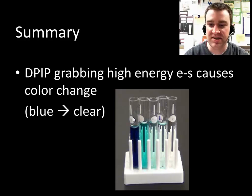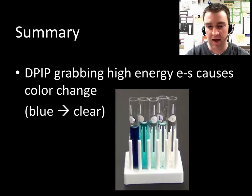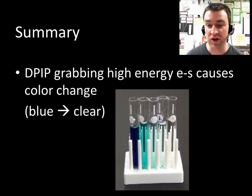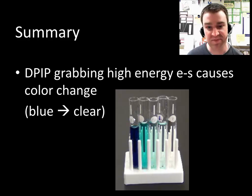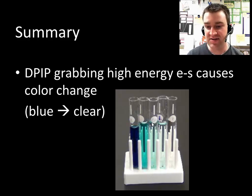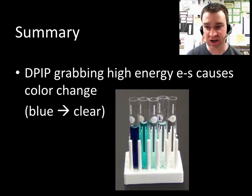How does that help us? When DPIP grabs the high-energy electrons — which is what they call this a dye-reduction technique, since grabbing high-energy electrons is also called chemical reduction — it causes the chemical to change colors. DPIP without high-energy electrons is a very deep blue in color.